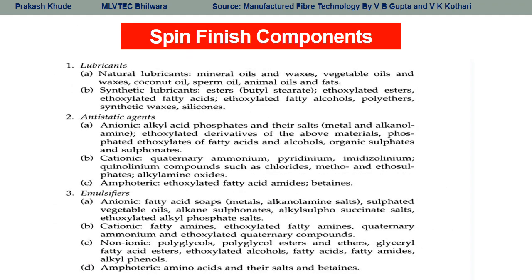Although spin finish is only a minor or transient part of the total fiber production system, it plays a very important role in processing. The spin finish invariably contains a large number of chemical components. The major components are lubricant, anti-static agent, and emulsifier. In addition, spin finish contains small proportions of antioxidants, antibacterial products, corrosion inhibitors, defoamers, and other additives. Excellent advancements have taken place in the chemistry of spin finish chemicals used in each category.